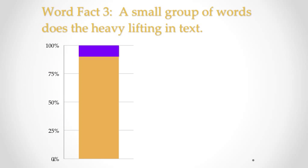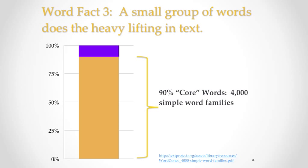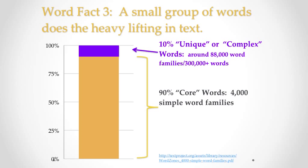The third word fact is that a small group of words does the heavy lifting. As this slide demonstrates, there are approximately 4,000 simple word families — a group of words such as help, helping, helper, helped, but not helpful or helpless. These make up 90% of the words in most text students read. Then there's another 10% that gives uniqueness to different kinds of text, and there are about 300,000 words or about 88,000 word families in this group.